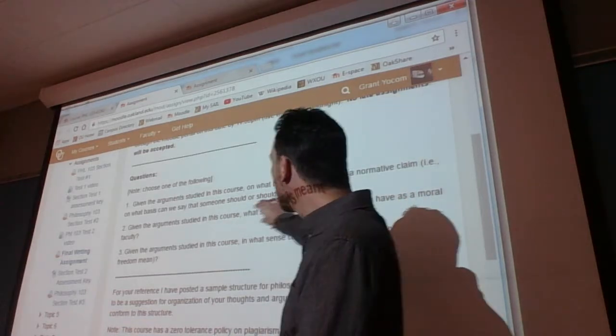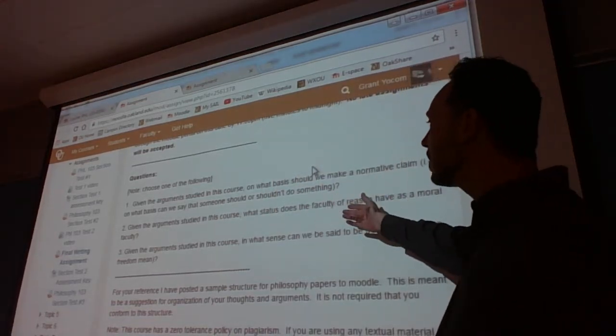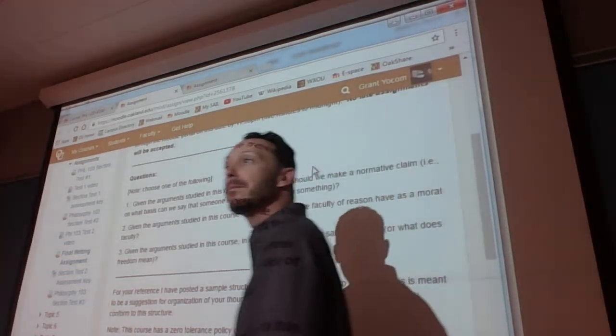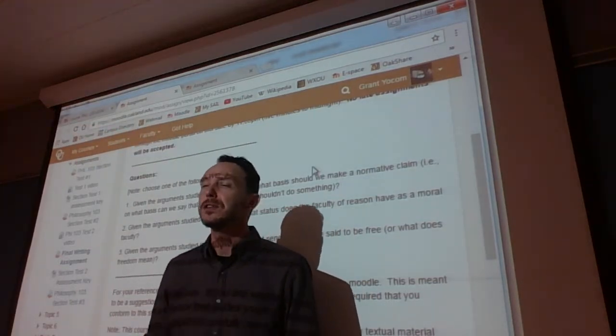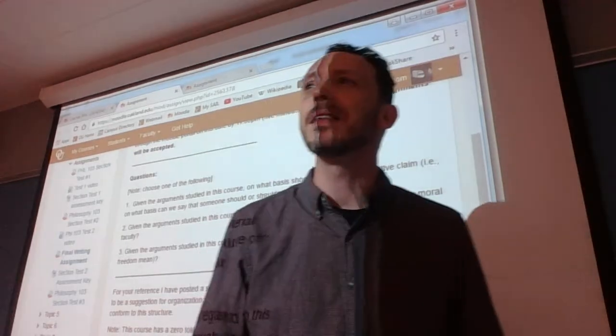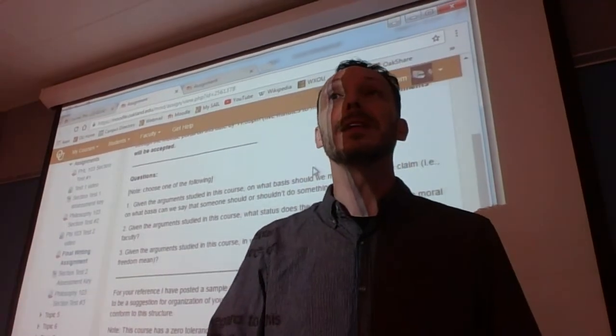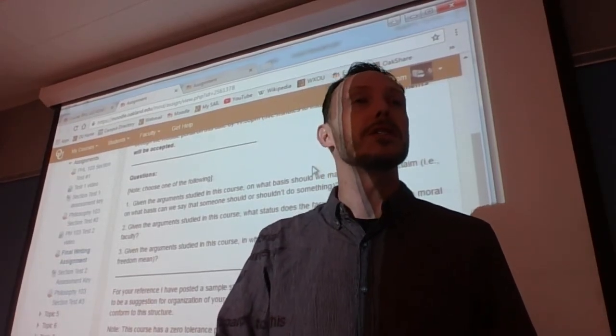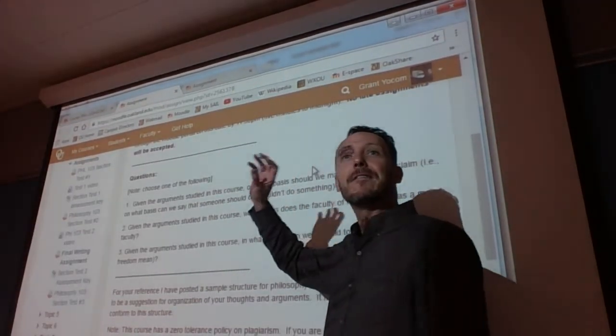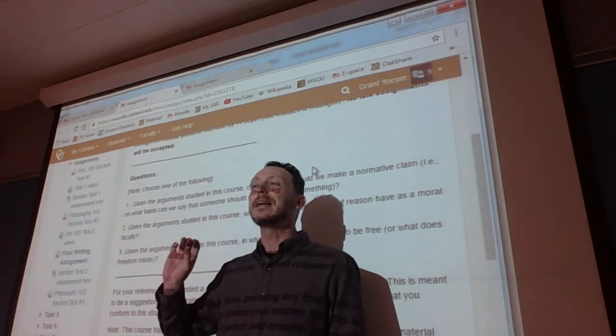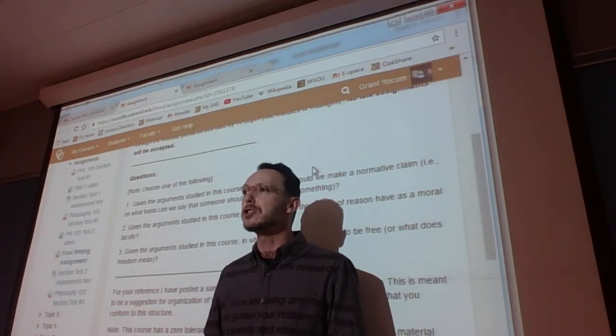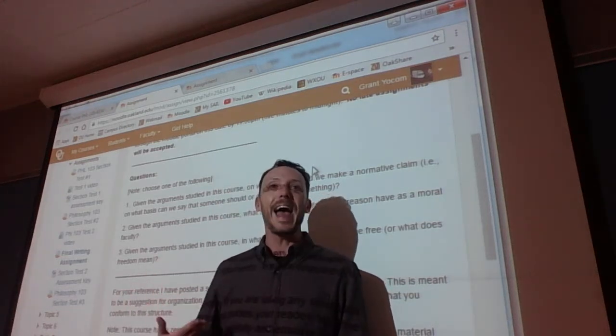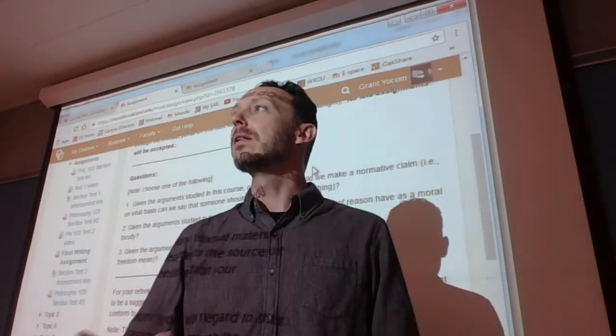That's each and every one of the normative bases that we've studied so far in the class. I've tried to give you a well-rounded smattering of classical and postmodern theory with regard to how we make these kinds of choices. The second question: given the argument studied in this course, what status does the faculty of reason have as a moral faculty?